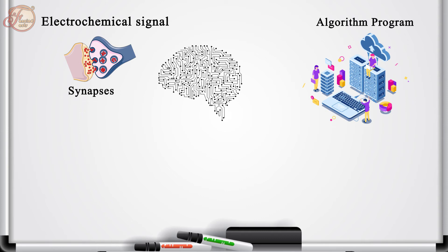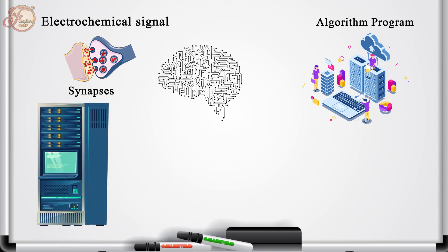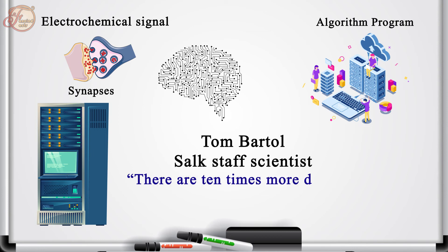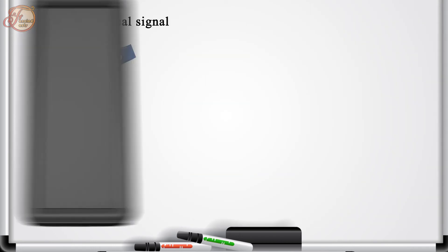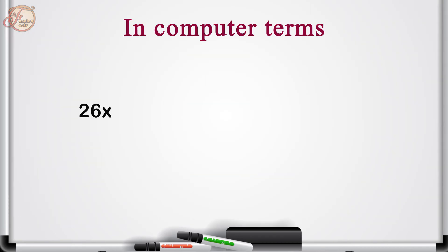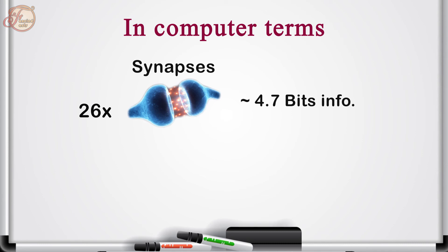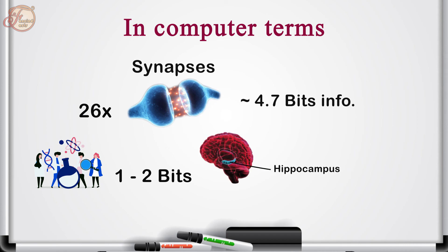So it means there is far more information that could be stored. Tom Bartol, a Salk staff scientist who worked on the study, said, 'Data suggests that there are 10 times more discrete sizes of synapses than previously thought.' In computer terms, 26 sizes of synapses correspond to about 4.7 bits of information, before experts assumed that it was capable of just 1 to 2 bits for short-term and long-term memory storage in the hippocampus, which is part of the brain that consolidates memory from short-term to long-term.